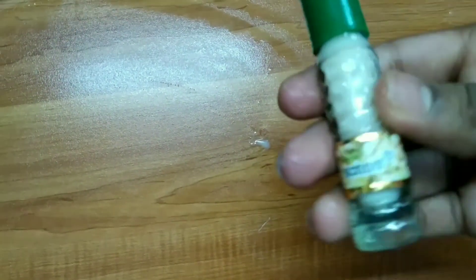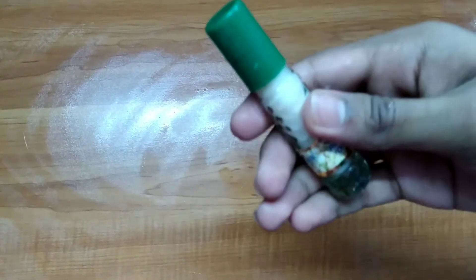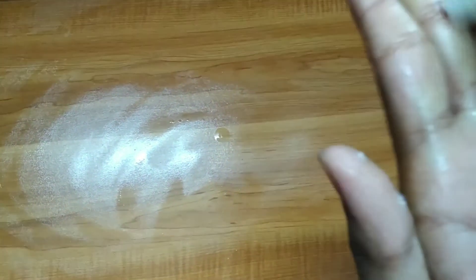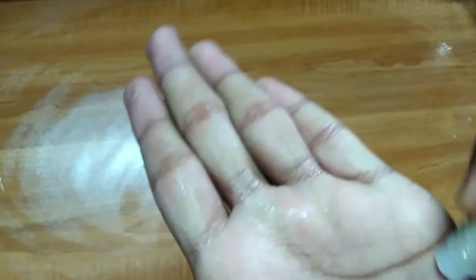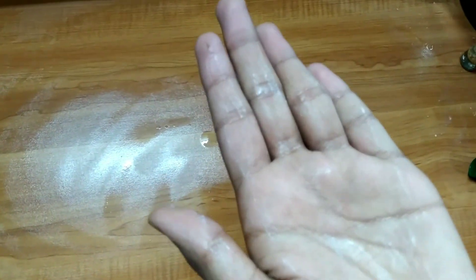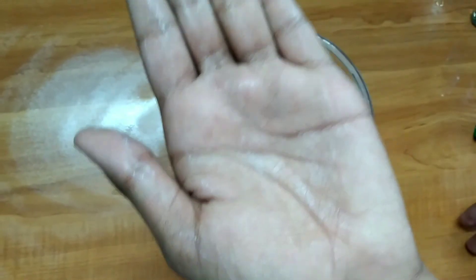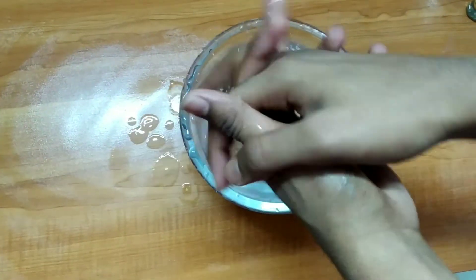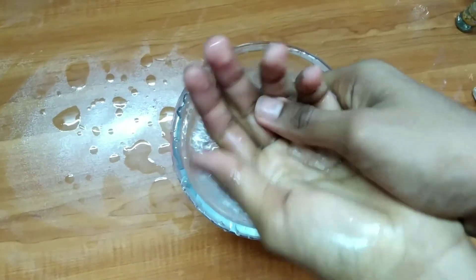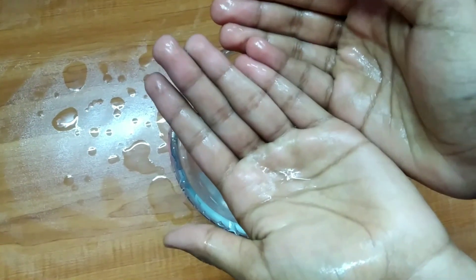Now let's see how to use this. Apply this mixture on dry hands. Now you can wash your hands with water. That's it. So in this way you can reuse the soaps. Thank you.